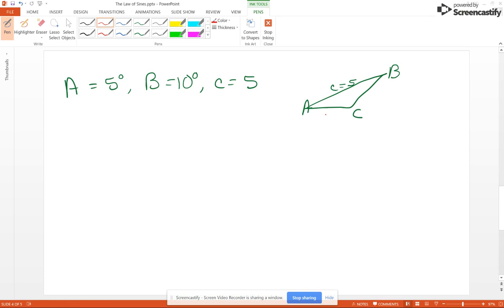So what we need to do is find angle C, side B and side A. Now angle C is going to be of course the easiest of the three items. We're going to take 180 minus 5 degrees minus 10 degrees and that's going to give us 165 degrees.